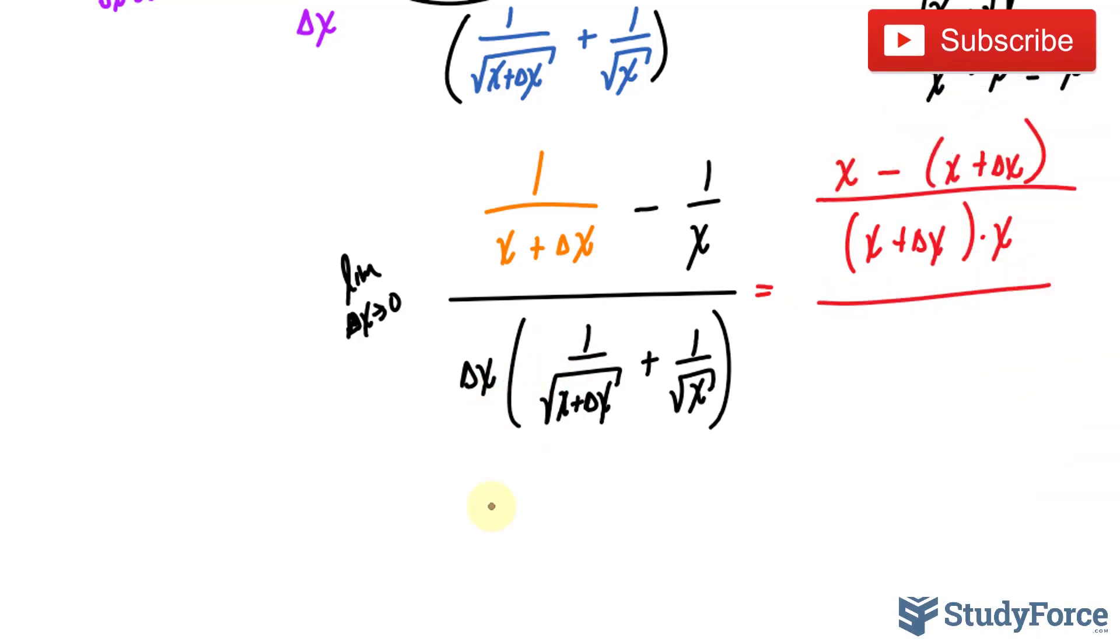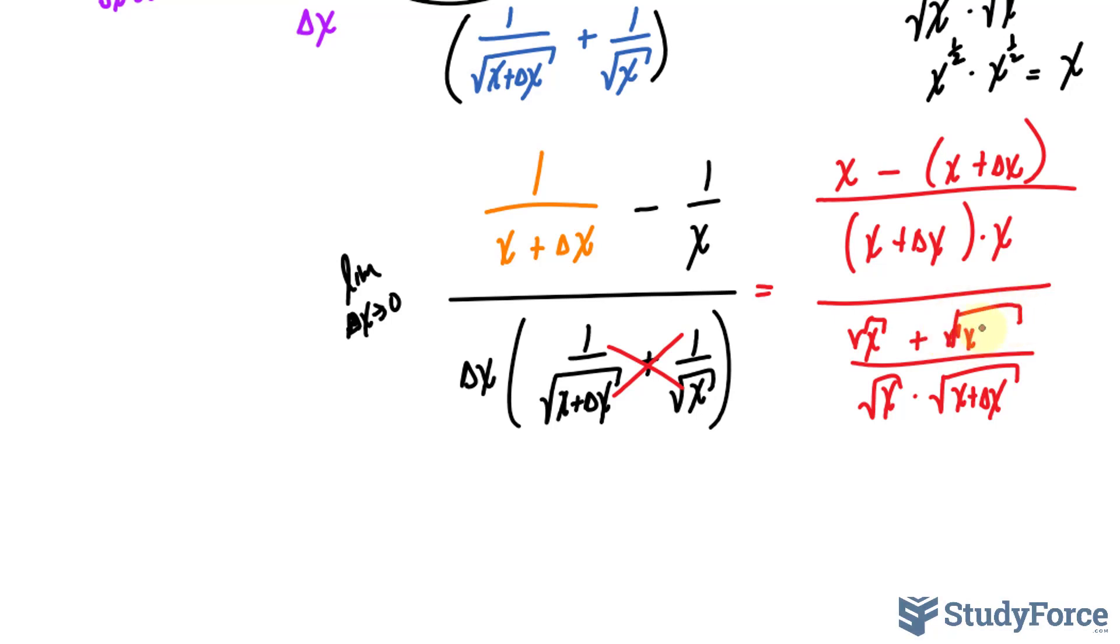So we just combine the top. Now the bottom. So multiplying the denominators out, we get the square root of x times the square root of x plus delta x. Do the cross multiply thing just as before. The square root of x plus delta x. And I'm leaving this outside for now.